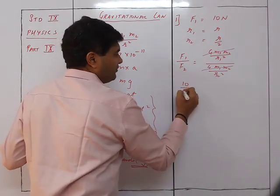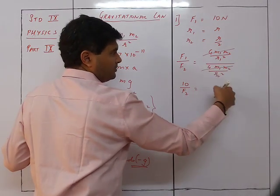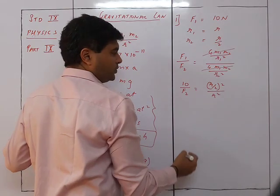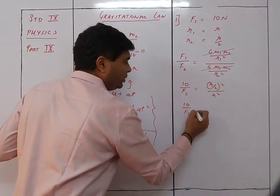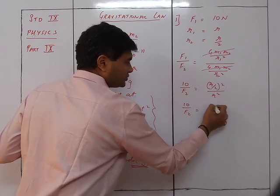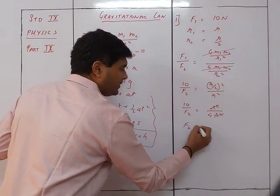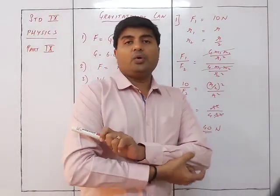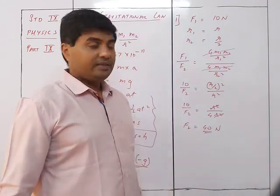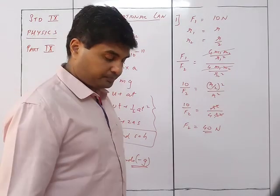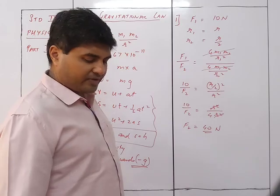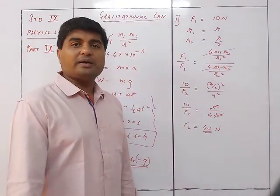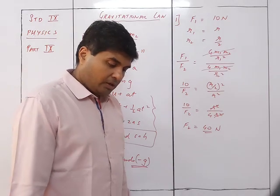The m₁m₂ terms cancel. So 10/F₂ = (r/2)²/r² = r²/(4r²), giving 10/F₂ = 1/4, so F₂ = 40 newton. When distance is reduced to half, the force becomes four times. Whenever comparing forces, taking the ratio is always easier so equal terms cancel out.